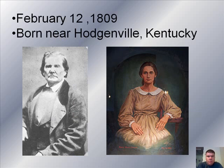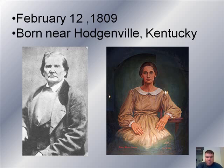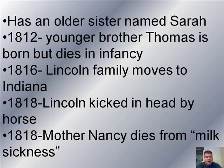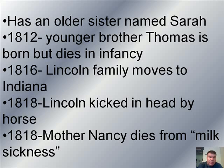Abraham Lincoln was born on February 12, 1809. He was born near a town called Hodgenville, Kentucky. His father is pictured there on the left, and his mother on the right. We don't actually have any photographs of his mother because she died so early. He has an older sister named Sarah, and in 1812 when he's three years old, he has a younger brother named Thomas, but that brother dies as a baby, which wasn't uncommon for the time period.